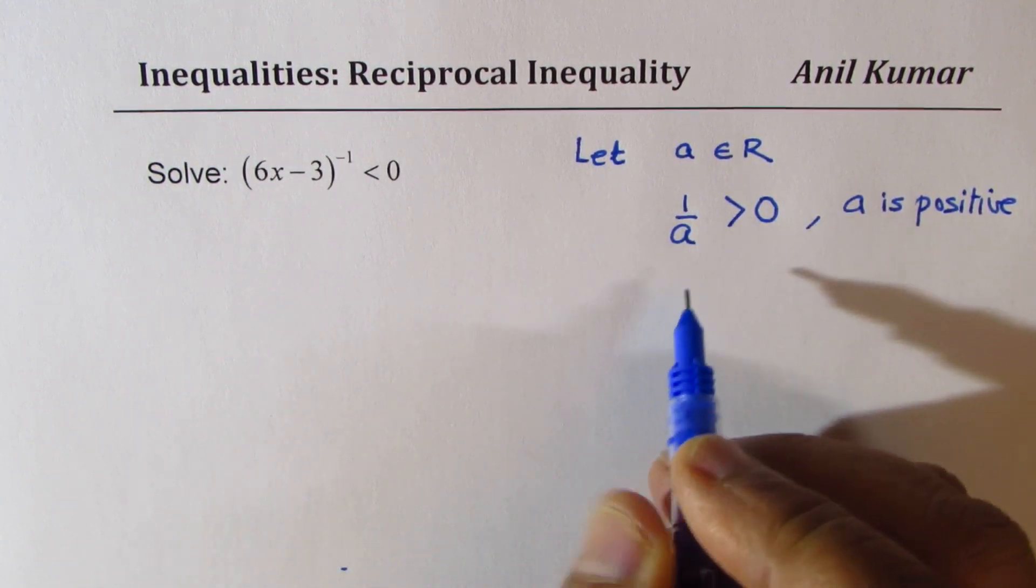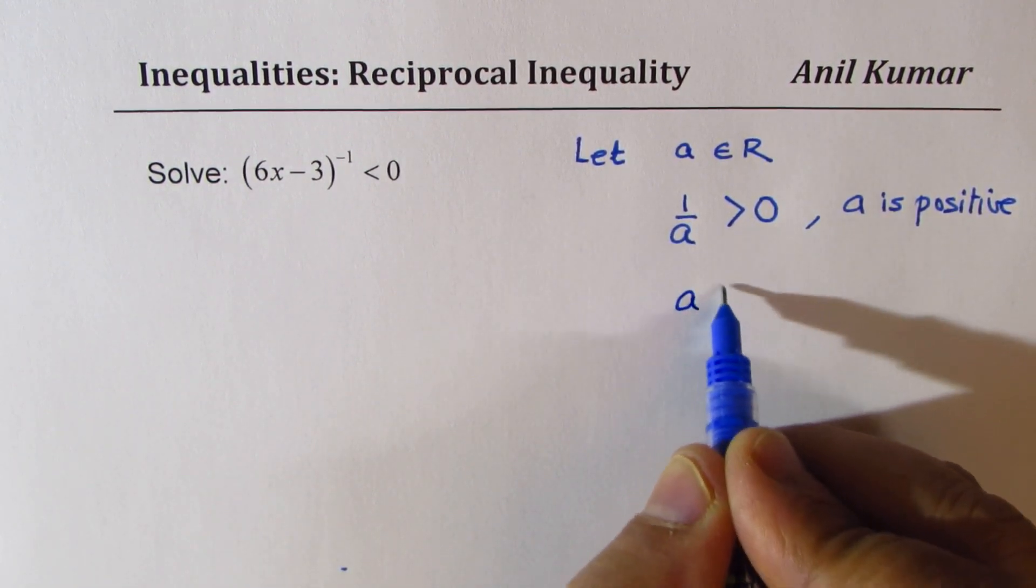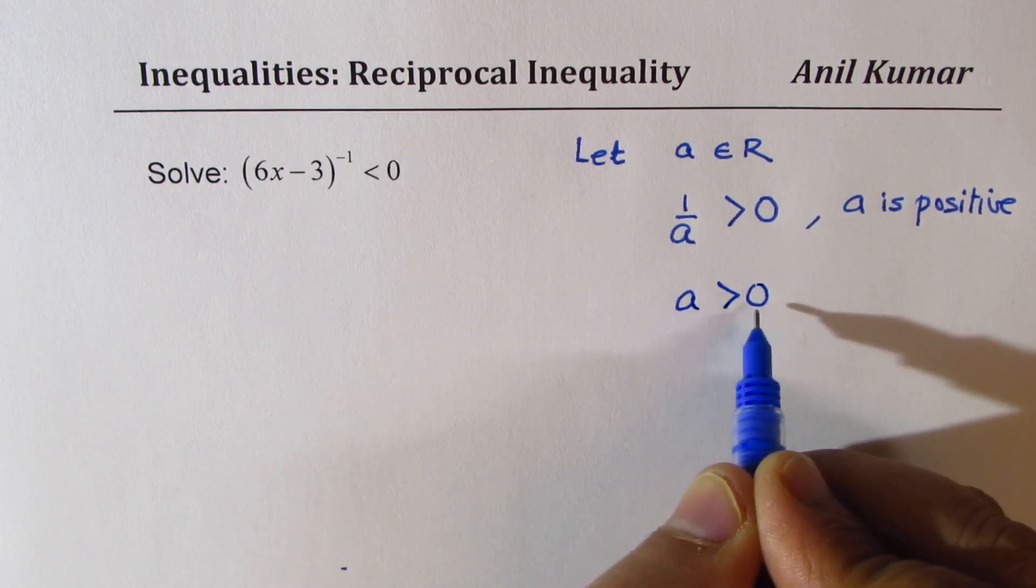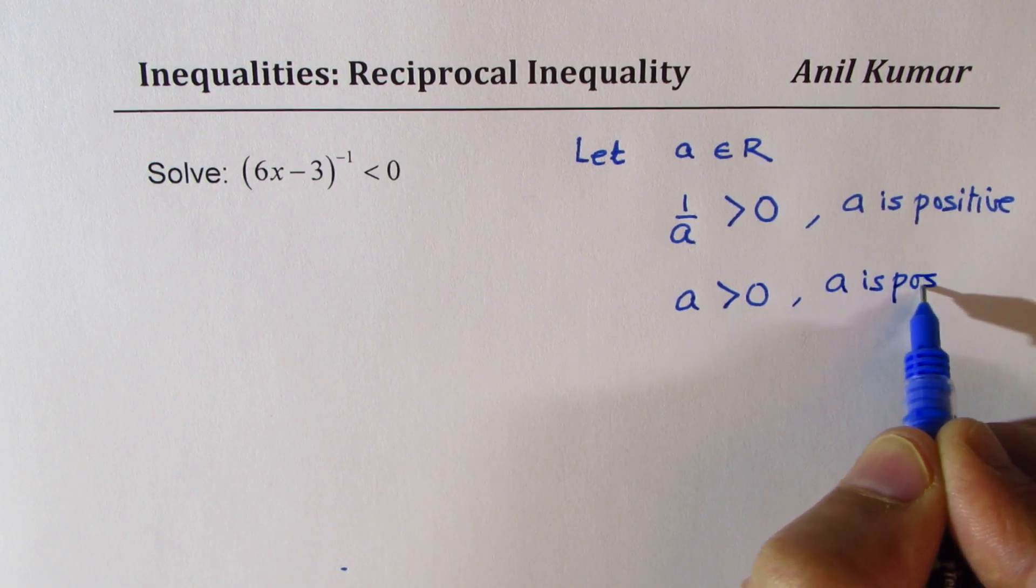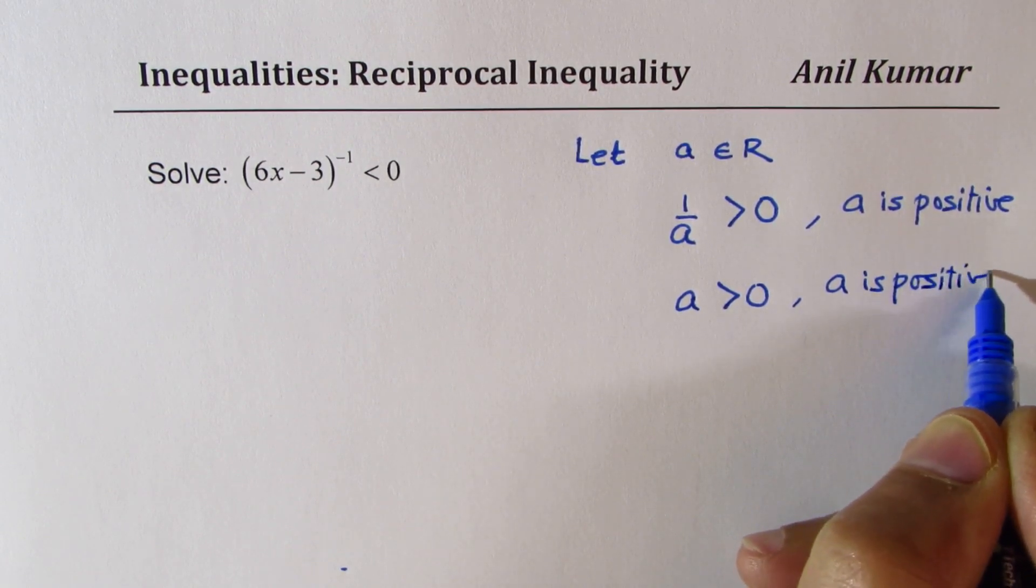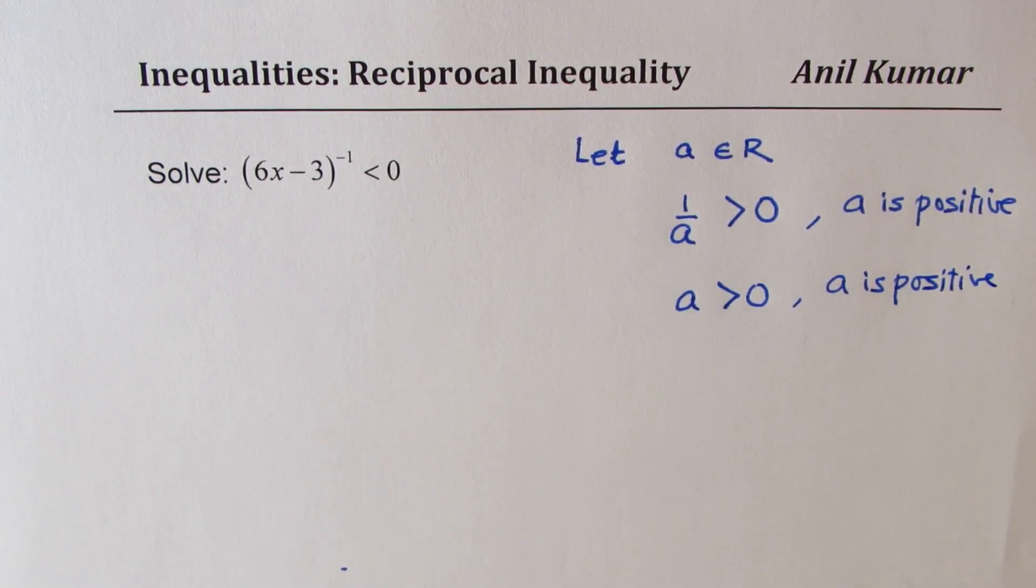So for that to be true, even A should be greater than 0. So that also means A is positive. Does it make sense?